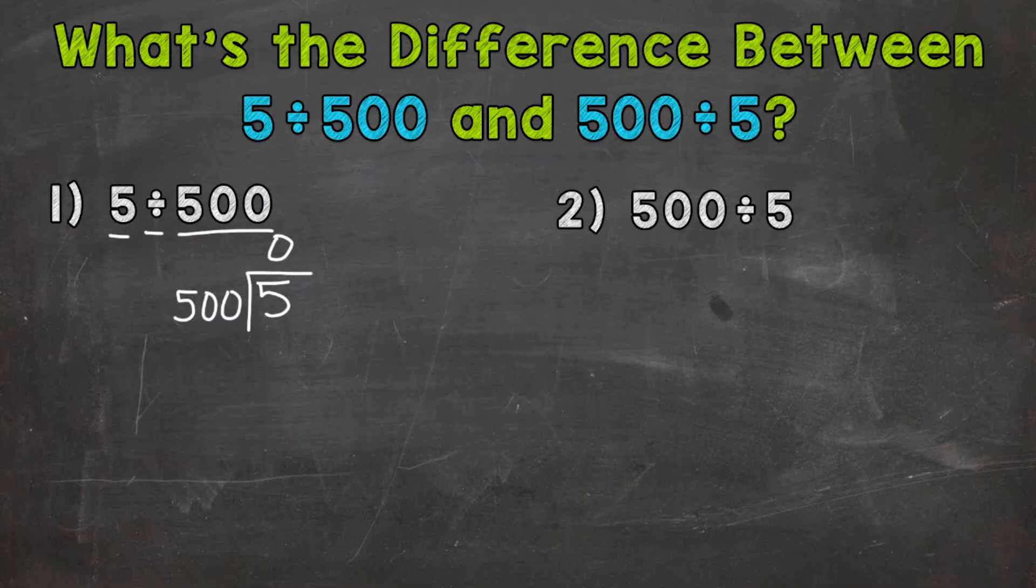Multiply. 0 times 500 is 0. Subtract. We get 5. And now we bring down.